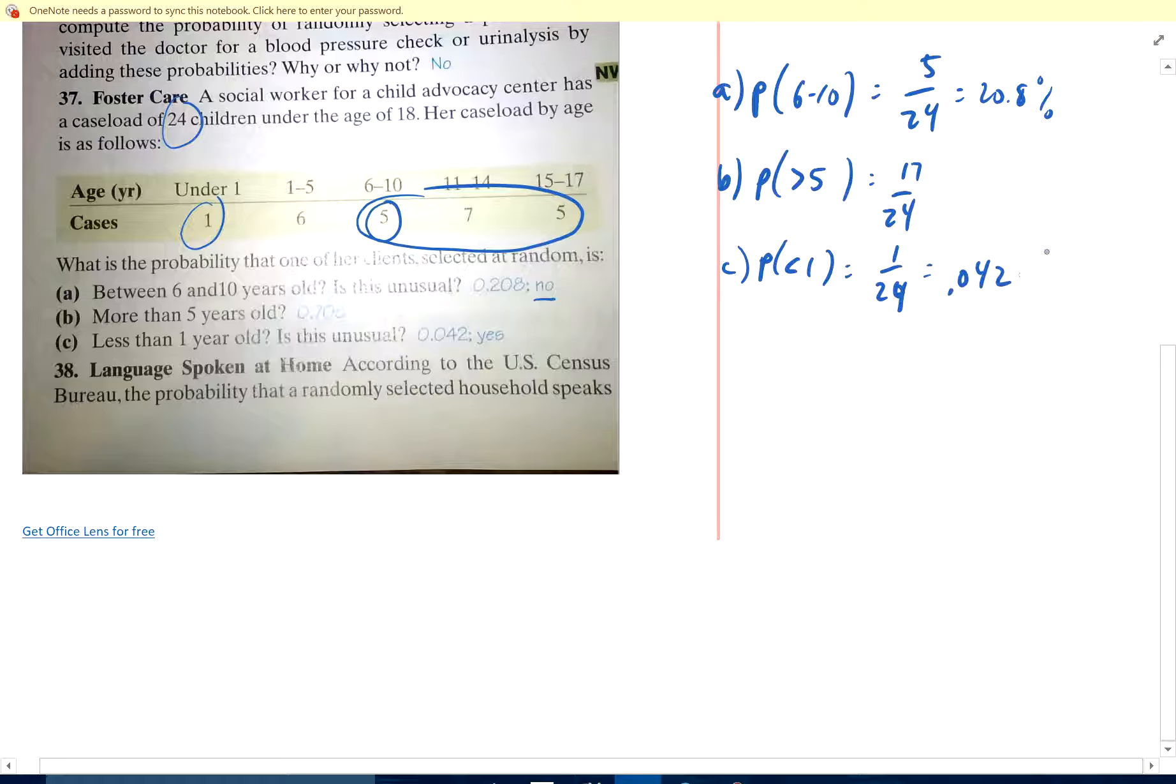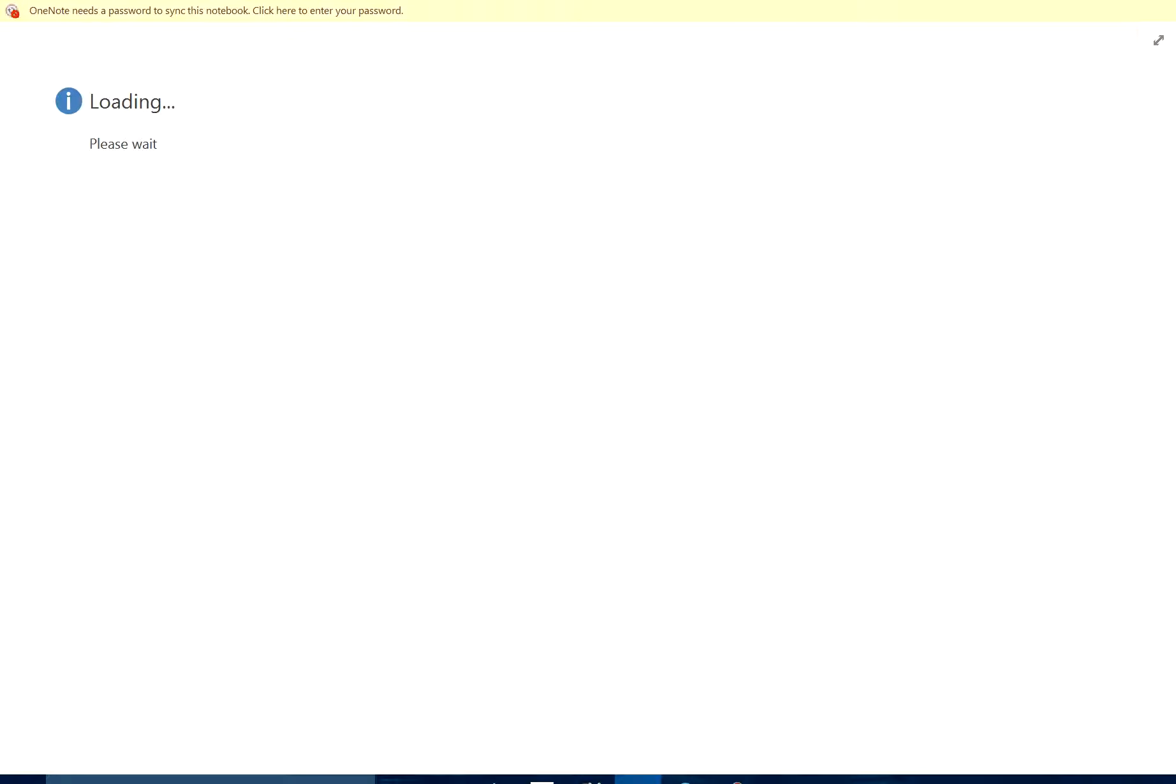Less than 1 year, 1 out of 24. We keep asking about unusual because that's going to come into play a lot later on. And 1 out of 24 is 0.042. And yes, that is unusual because it's 4.2%, less than 5%.